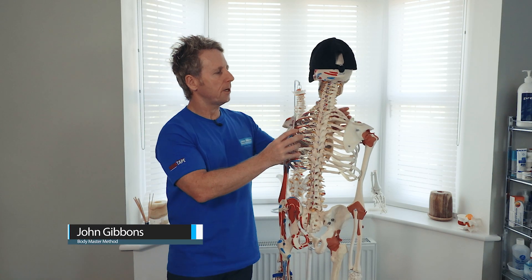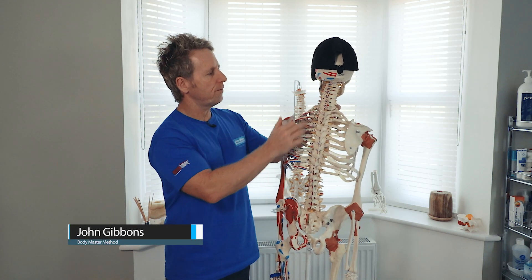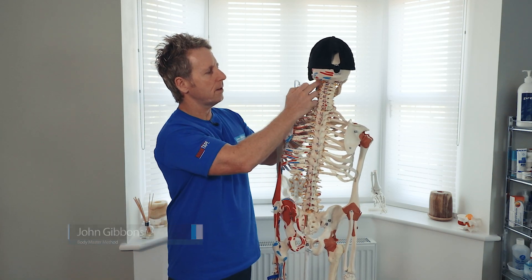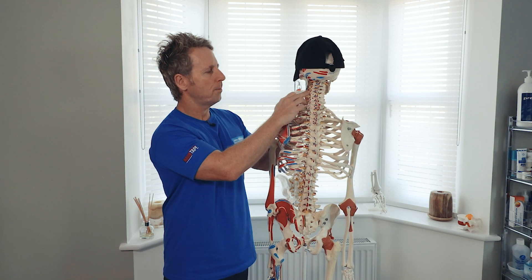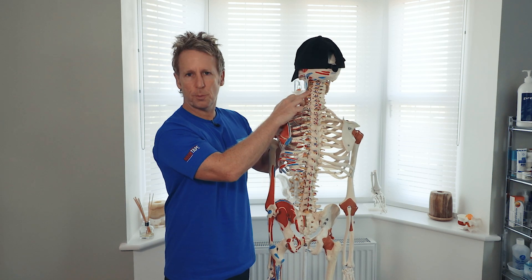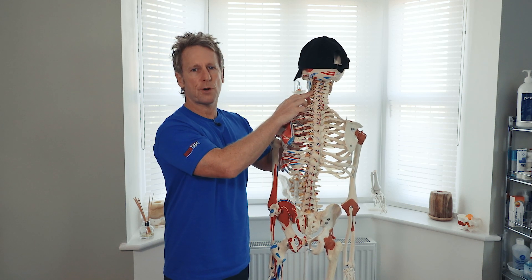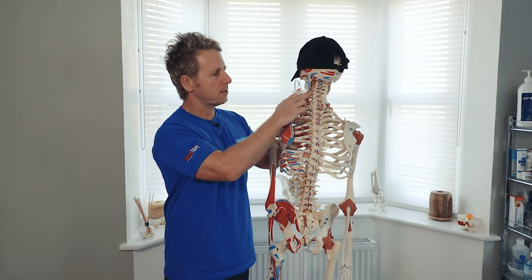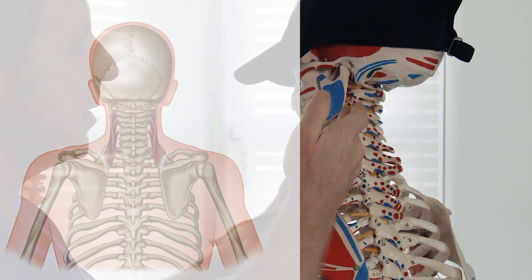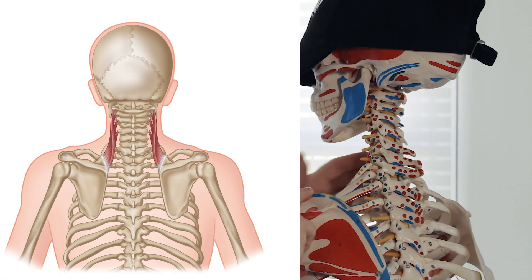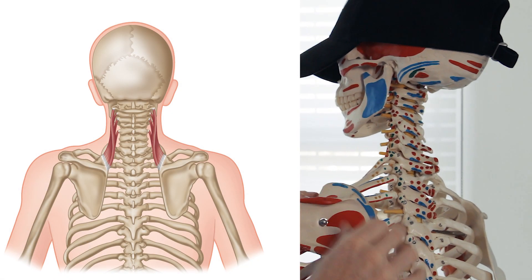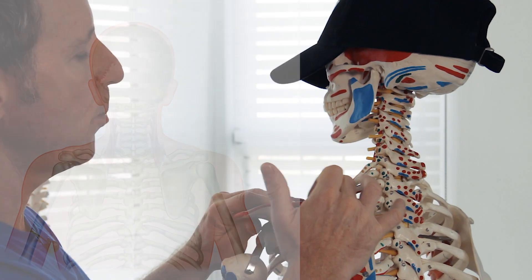The levator scapulae attaches from the C1, C2, C3, C4 posterior tubercles of the transverse processes, and it attaches onto the superior angle of the scapula and also onto the medial border.